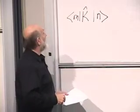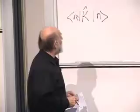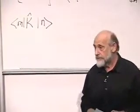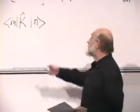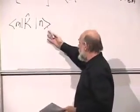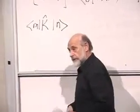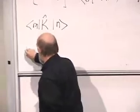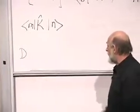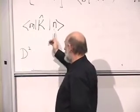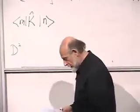N and M are basis vectors drawn from the same basis. This could be N equals 3, N equals 2, and so forth. Since there are D basis vectors, where D is the dimension of the space, there are therefore D squared matrix elements. N can run from 1 to D, M can run from 1 to D.